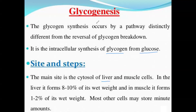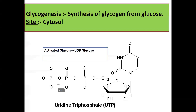Glycogenesis takes place in the liver and the muscle cells. In the liver, glycogen constitutes about 8% to 10% of tissue weight, while in muscles it is about 1% to 2%. Most other cells may also store minute amounts of glycogen. The synthesis of glycogen from glucose — glycogenesis — takes place in the cytosol. One key requirement of glycogen biosynthesis is UTP, which is uridine triphosphate, used to activate glucose before it is added to the growing glycogen chain.